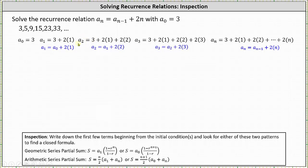Notice how the terms are 3 plus the sum of an arithmetic sequence. In general a sub n is equal to a sub n minus 1 plus 2n which we can write as a sub n equals 3 plus 2 times 1 plus 2 times 2 plus 2 times 3 all the way out to plus 2 times n.